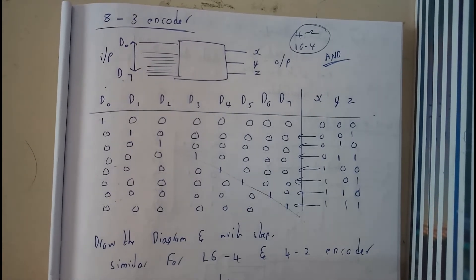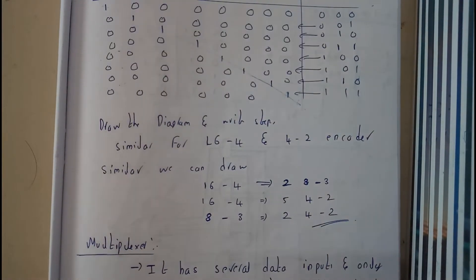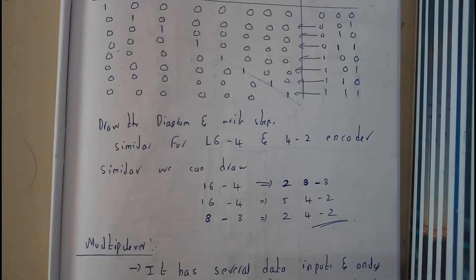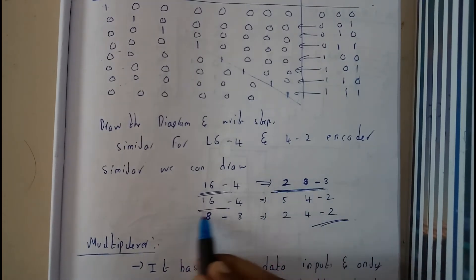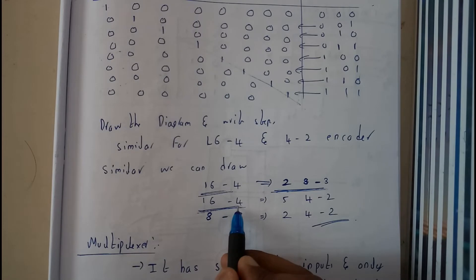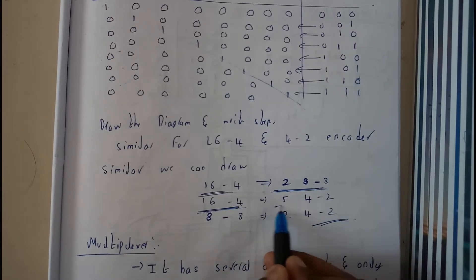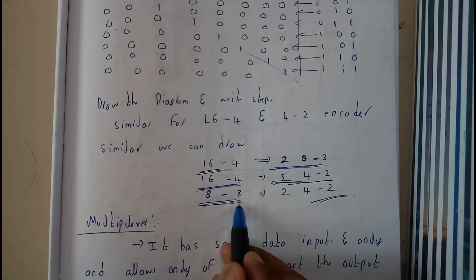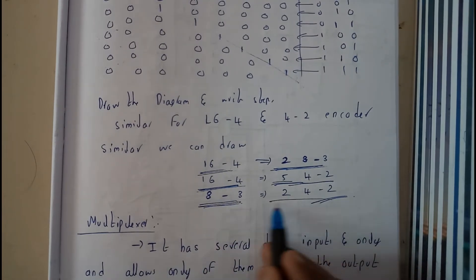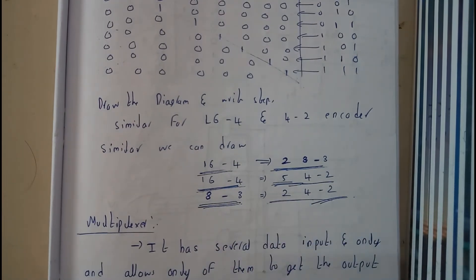Okay, and one more thing guys. We can draw a 16-to-4 decoder using 2 8-to-3 decoders. Similarly, 16-to-4 encoder using 5 4-to-2 encoders. Similarly, 8-to-3 encoders can be drawn using 2 4-to-2 encoders.